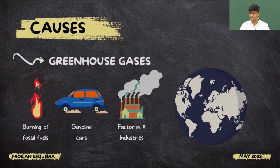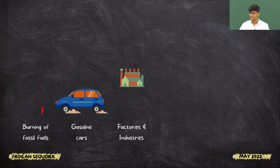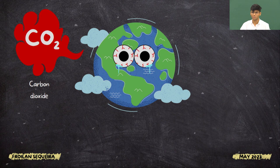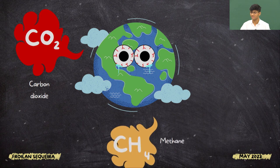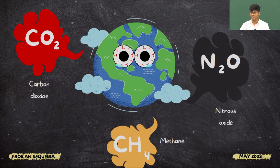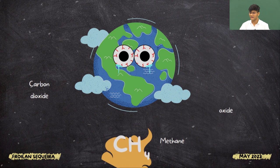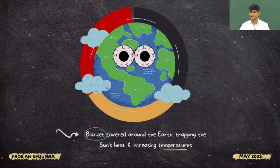Greenhouse gases are mainly carbon dioxide (CO2), methane (CH4), and nitrous oxide (N2O). These are the main three greenhouse gases being emitted. These gases act like a blanket covering our planet, trapping the sun's heat and increasing temperatures.